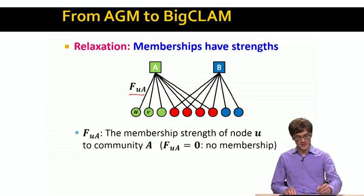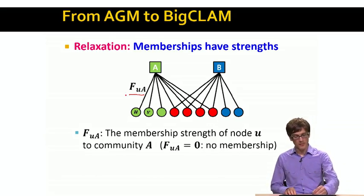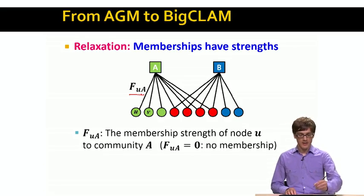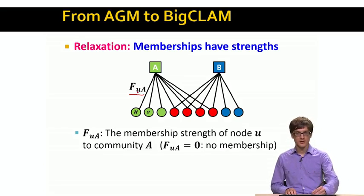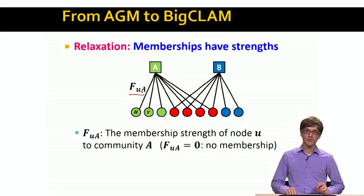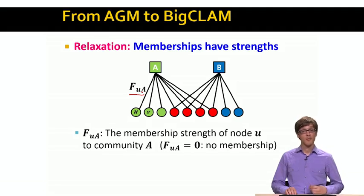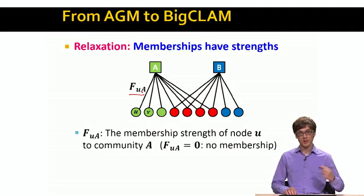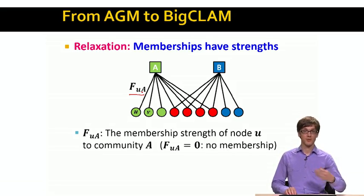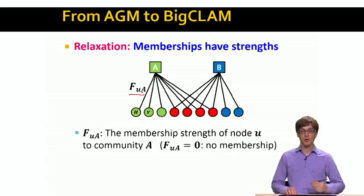We will label these membership strengths as F_u_A, where u is the name of the node and A is the name of the community. These membership strengths F are non-negative values: zero means no membership, and anything greater than zero means you are a member of a given community to a given degree.